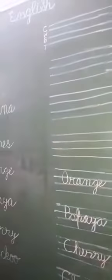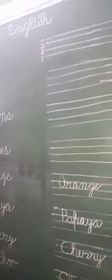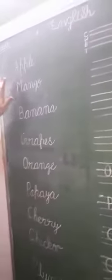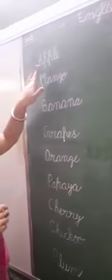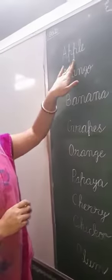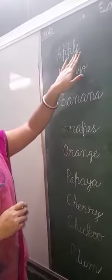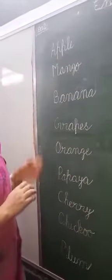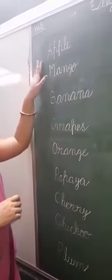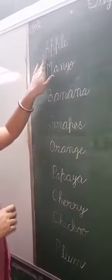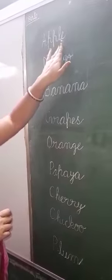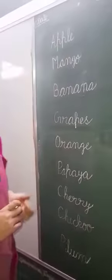You know the spelling of apple — A, double P, L, E. Apple. Speak with me: A, double P, L, E. Apple.